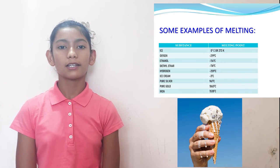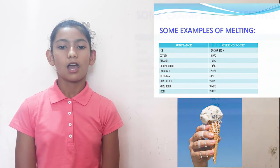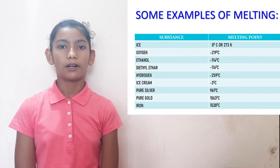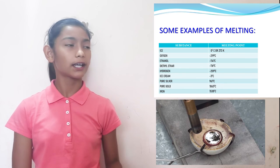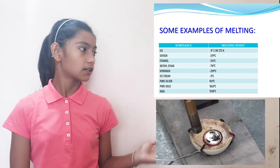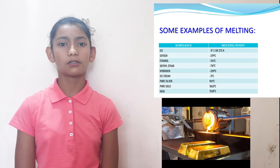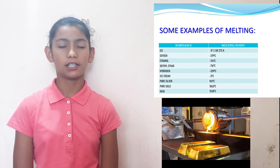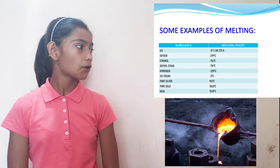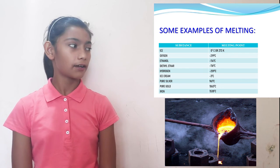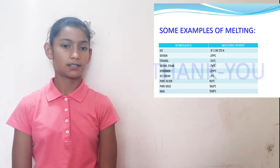Ice cream melts at minus 3 degree Celsius. Pure silver at 961 degree Celsius. Pure gold at 1063 degree Celsius. Iron at 1538 degree Celsius.